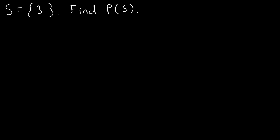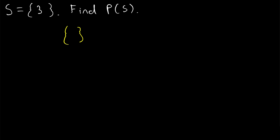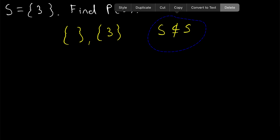Let's move on to example number two. We're just going up one element at a time. We started with the empty set; now we've got a set S that has one element. We just have to list the subsets. The empty set is a subset of every set, so that's going to be a subset of S. And then another subset of S would be the set S itself. Remember that every set is a subset of itself, because if S were not a subset of S, that would mean S contains something that S doesn't, and that wouldn't make any sense.